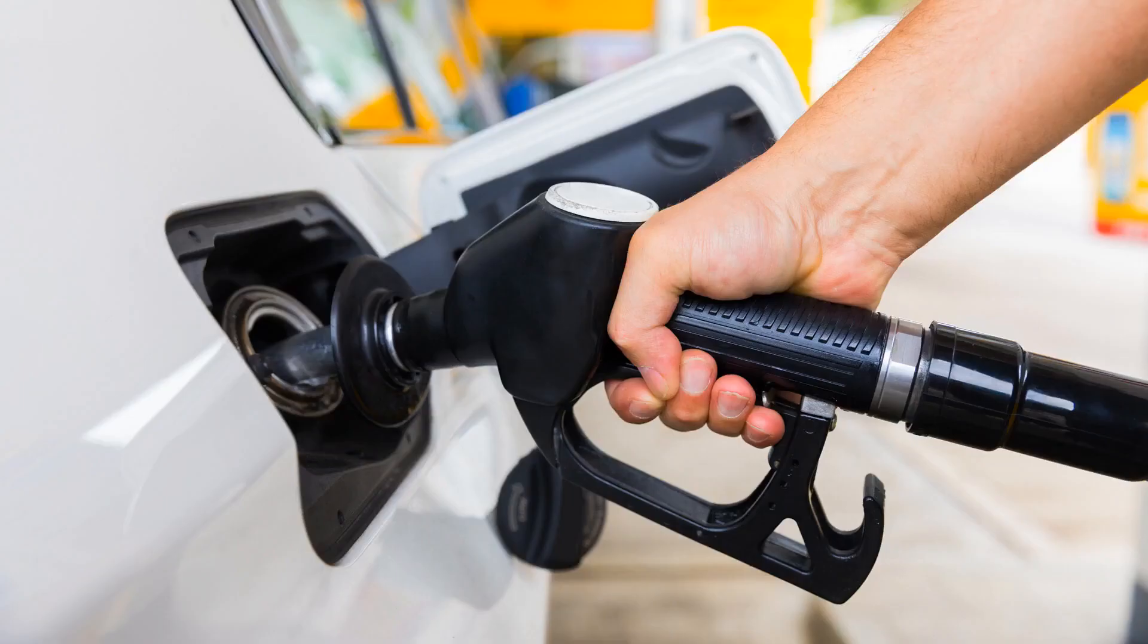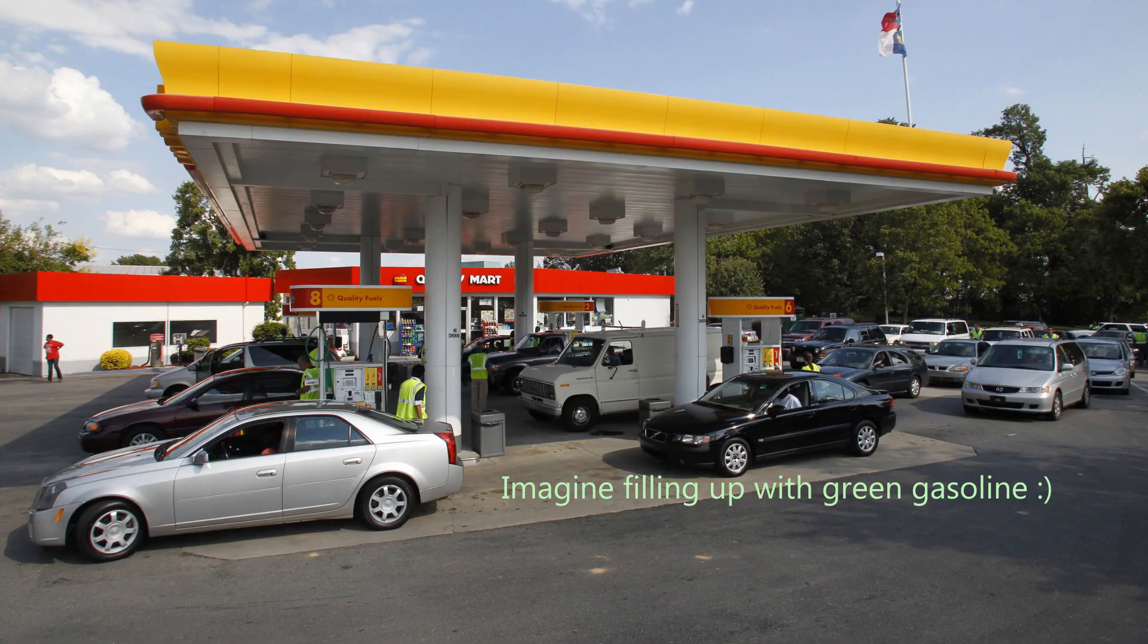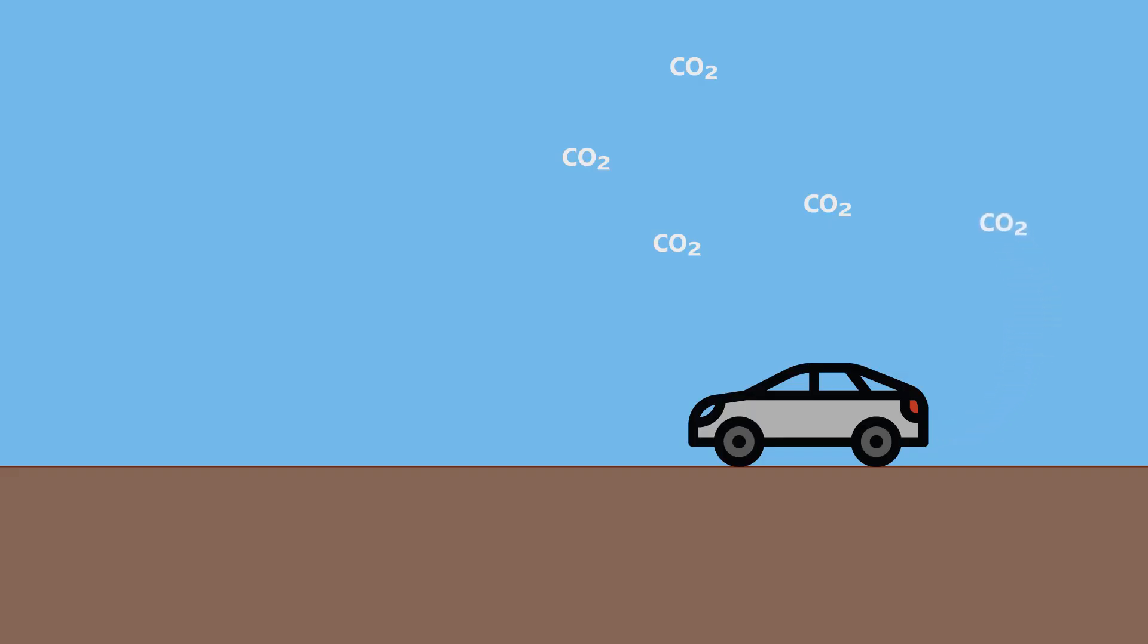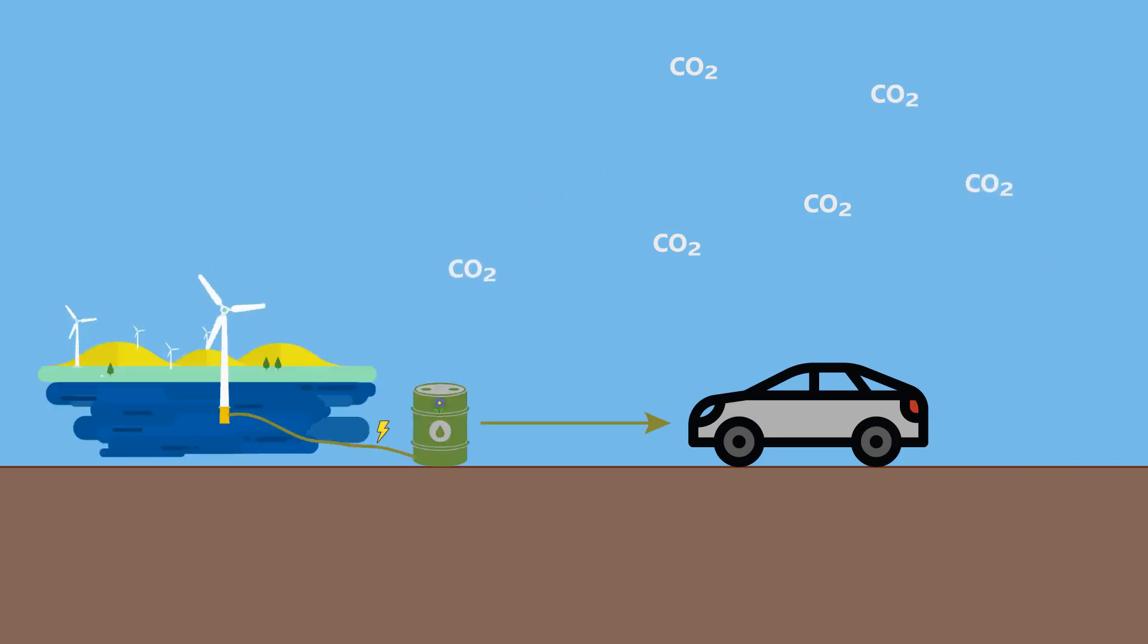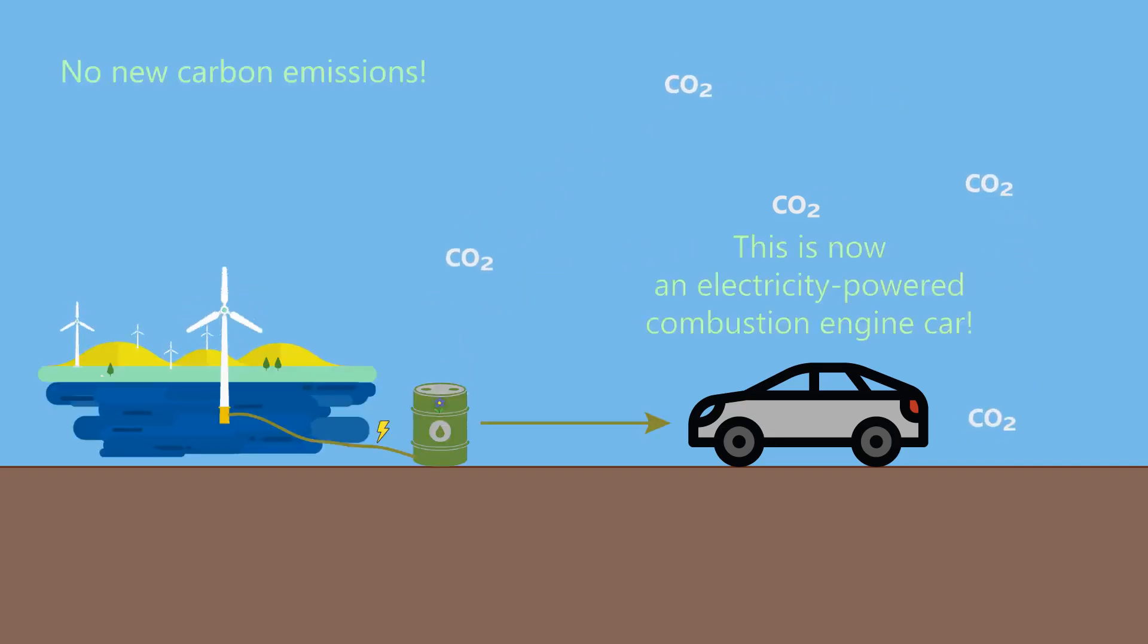This fuel can then be used in regular combustion engine cars, just like the fuel pumped and refined from the ground. It will then produce and release the same amount of CO2 into the atmosphere, but since the CO2 was removed in the first place, this is actually a carbon neutral cycle, just like an electric car.